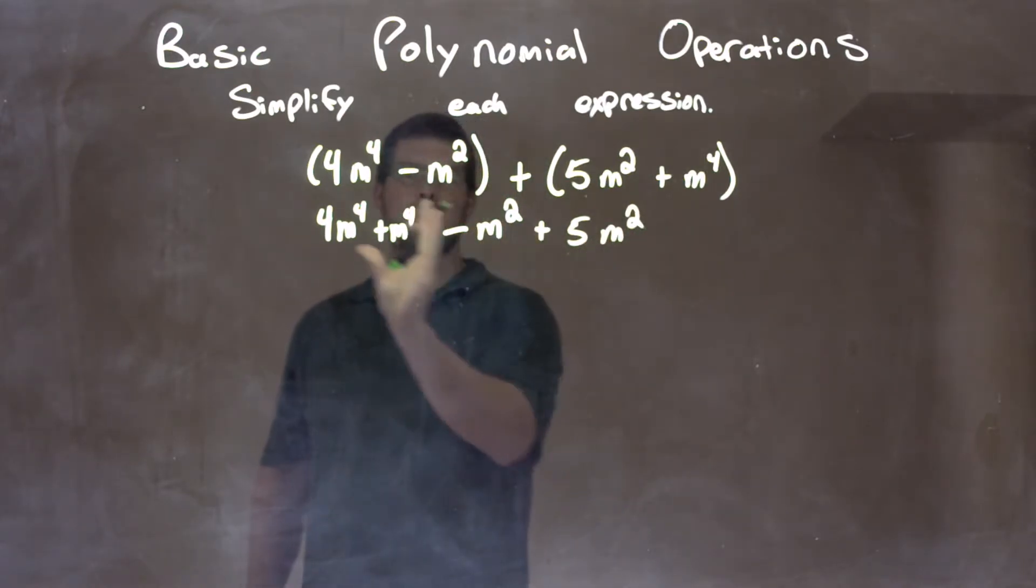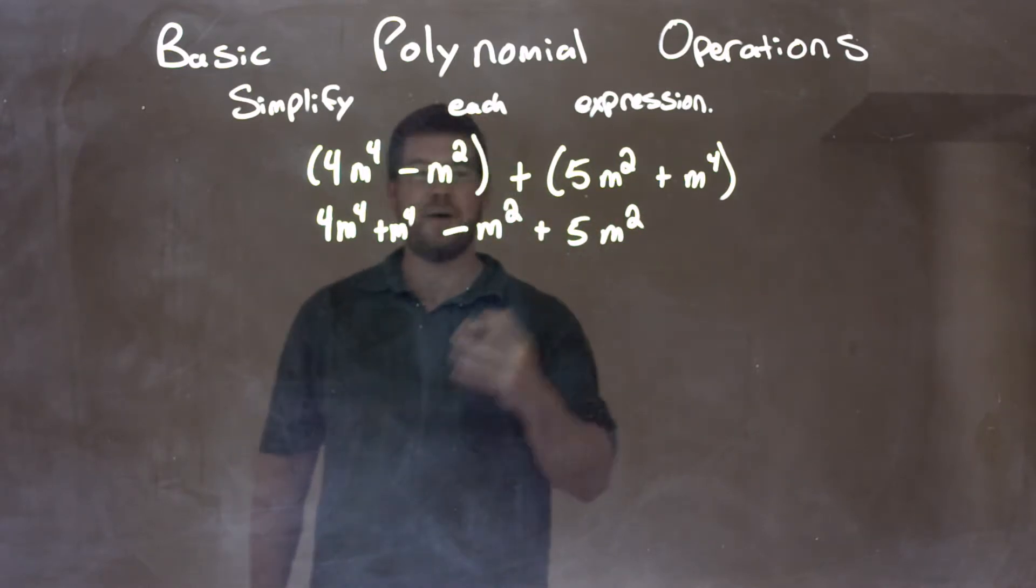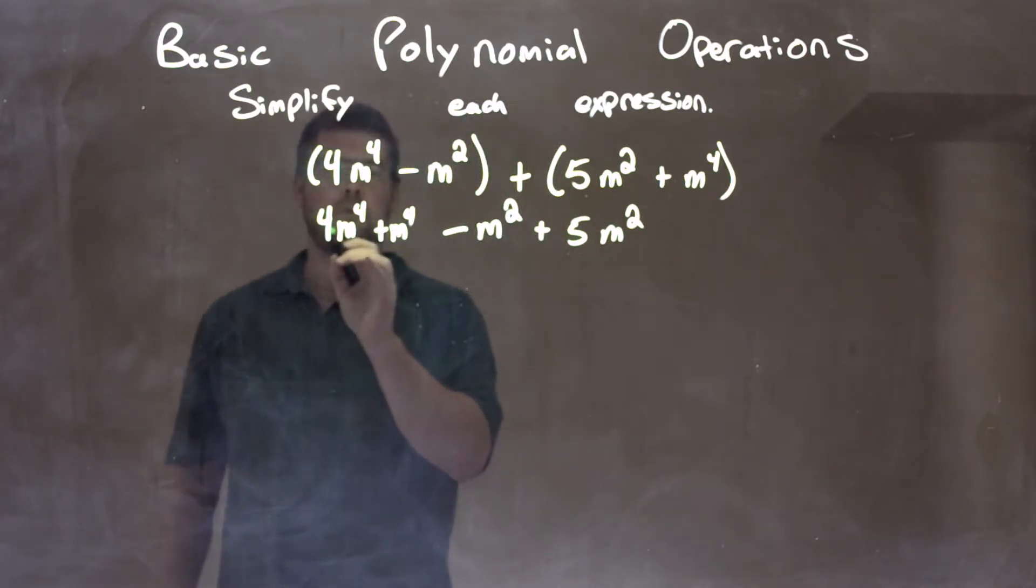So we have all of our like terms next to each other, all the degrees there. Now we can simplify and combine them. 4m to the 4th plus 1m to the 4th is 5m to the 4th.